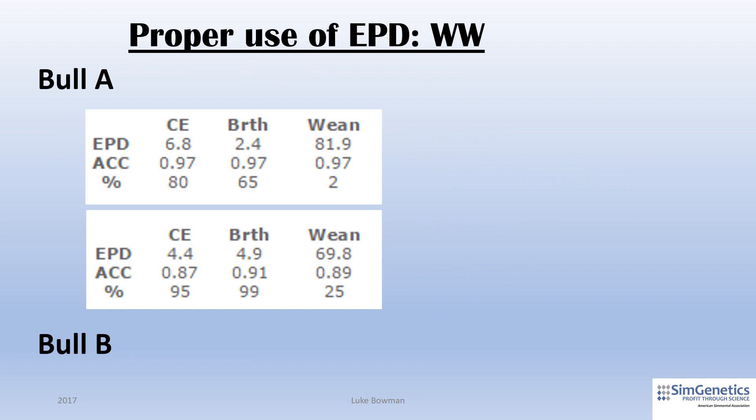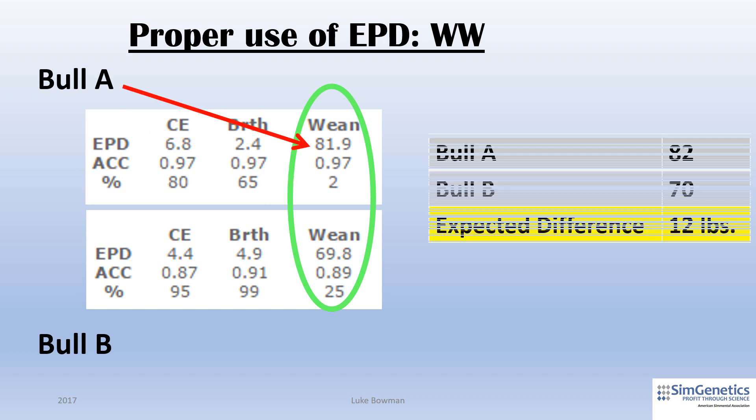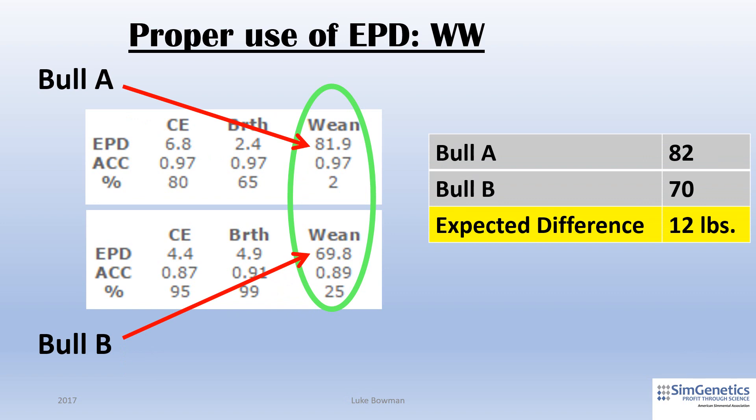Let's do one last example as if we were comparing bulls at herdbook.org. Remember, EPD stands for expected progeny differences. The weaning weight EPD is expressed in pounds. Comparing Bull A and Bull B, the difference between 82 and 70 is 12 pounds. This means that we would expect Bull A to sire calves that are 12 pounds heavier on average compared to Bull B when these calves are measured at weaning time.